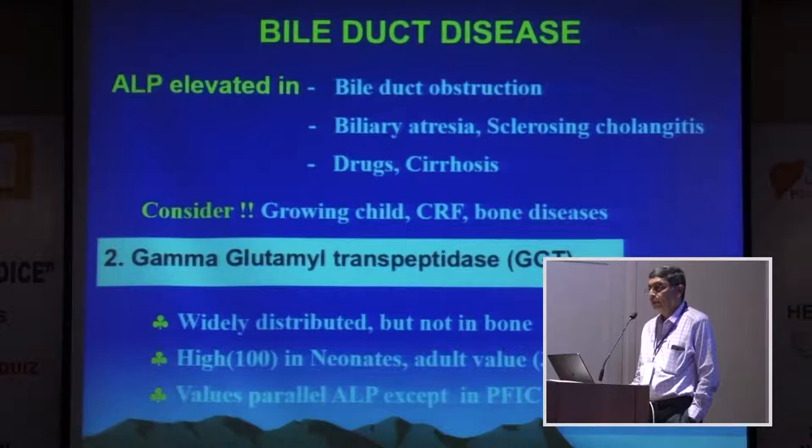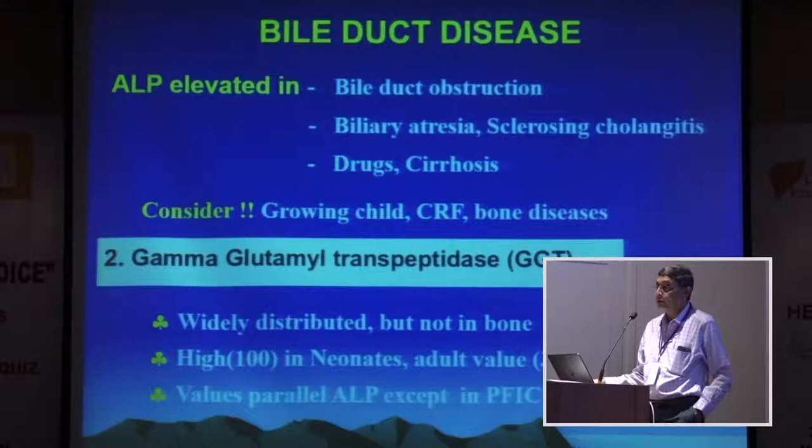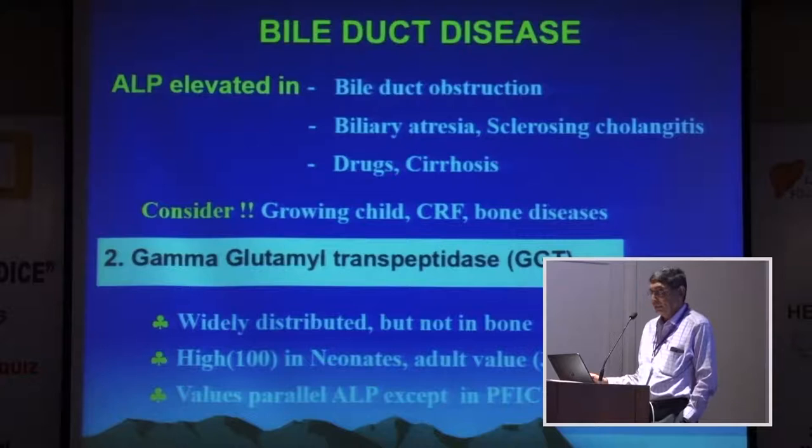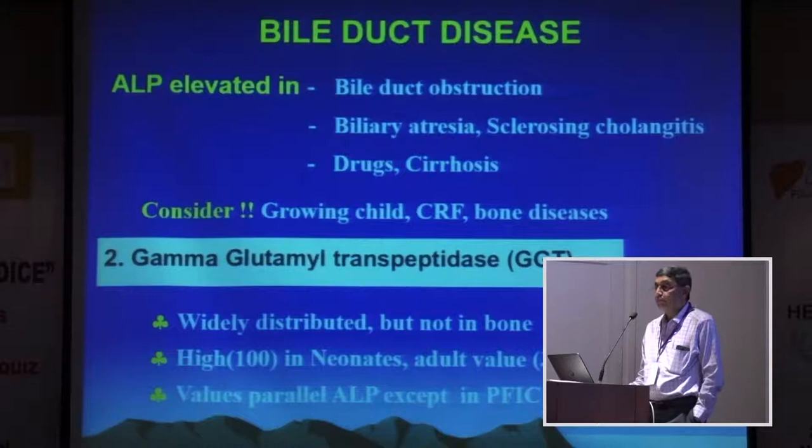In neonates, GGT is slightly higher up to about 6 months of age, with 100 taken as the cutoff. Adult values are reached by age 3 years. GGT values parallel ALP in most situations except in BRIC and PFIC.